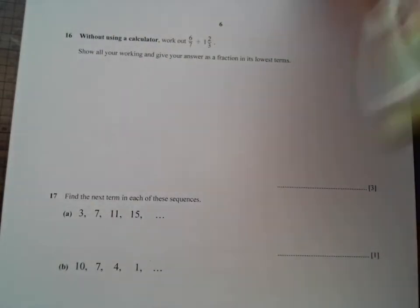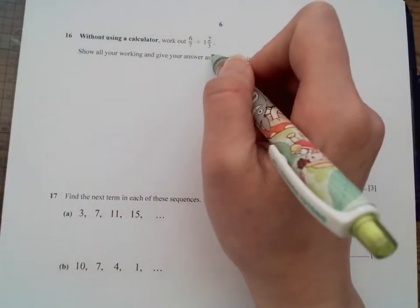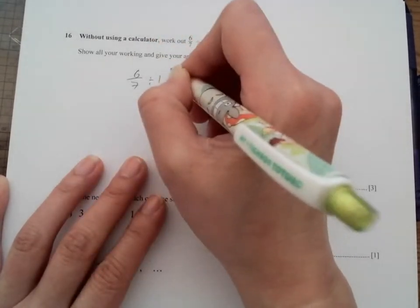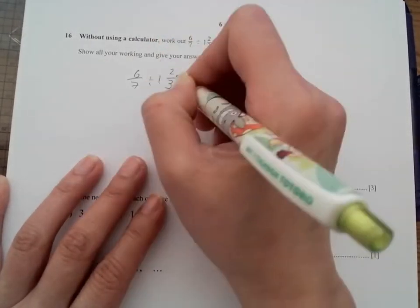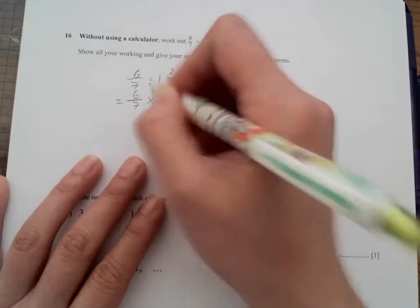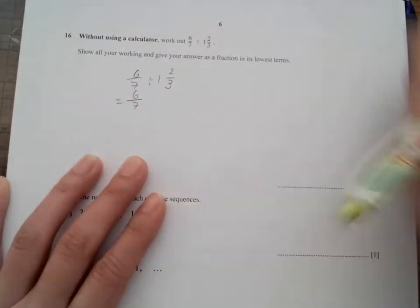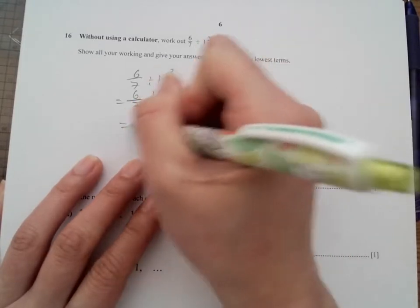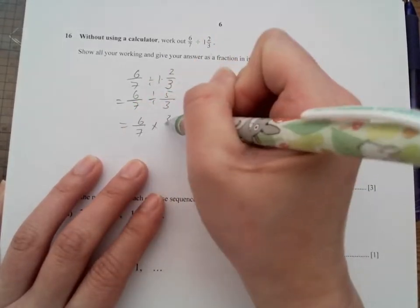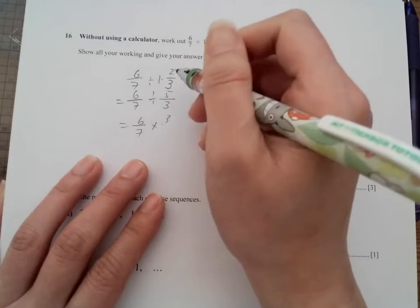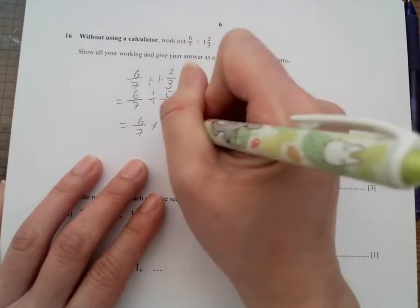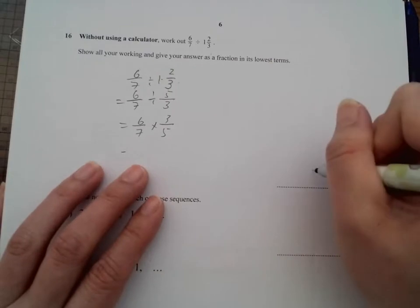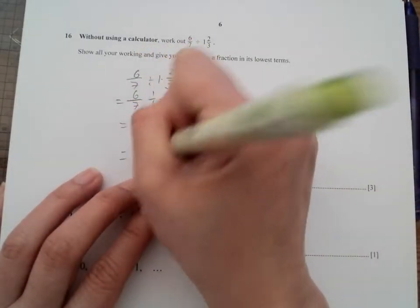Without using the calculator, so we throw that away. We need to show the working of those. So we have 6 over 7 divided by 1 and 2 over 3. So we have 6 over 7, change it to mixed number first, so it's 5 over 3, flip it to the other side. 6 over 7 times 3 over 5, multiply the rest of them because we cannot cancel anything out.